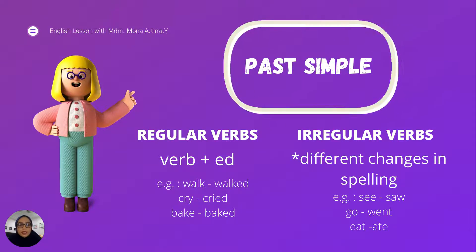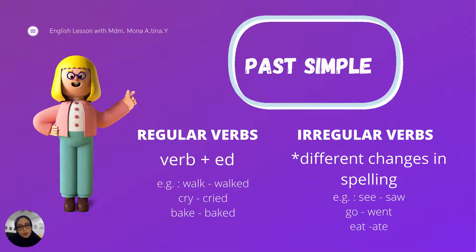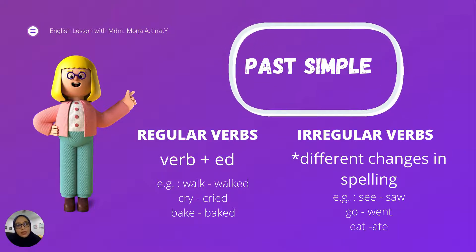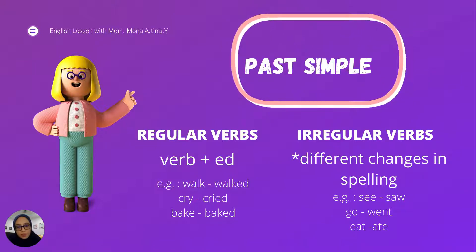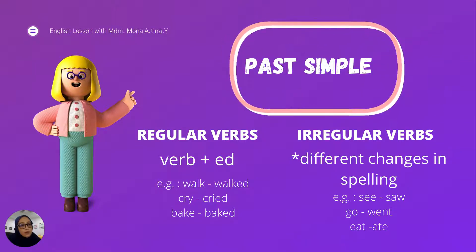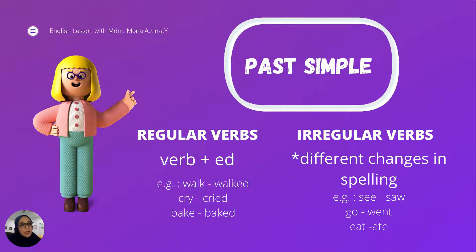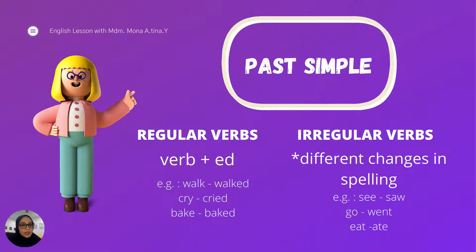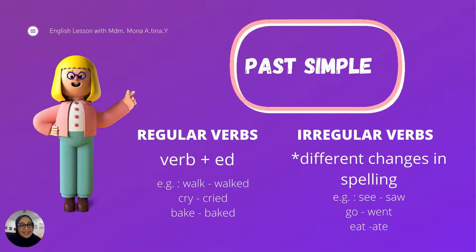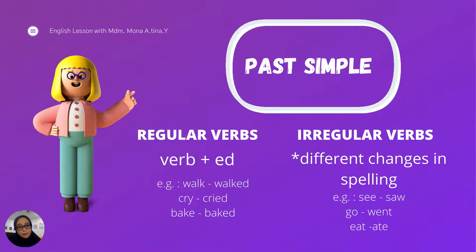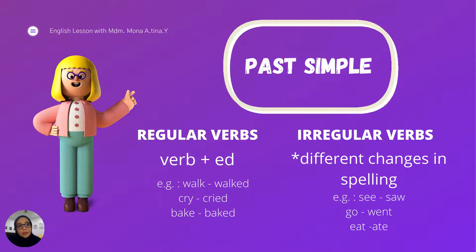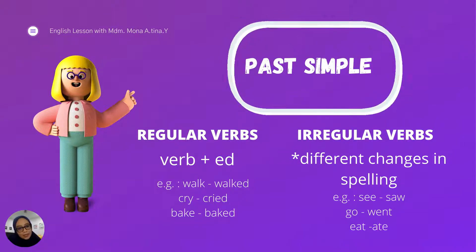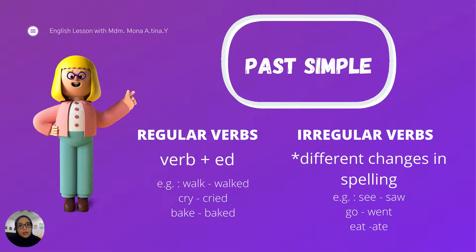So let's take a look at the revision of past simple. We have learned this since your primary school. We have regular verbs and also irregular verbs. When we want to write a past simple, basically we just have to add -ed to the end of the verb. For examples, we have the word walk, cry - cried, bake.